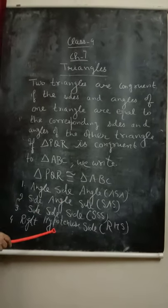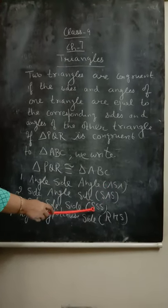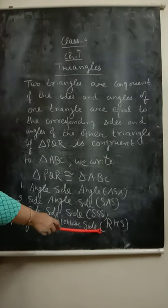These are the four criteria for congruence of triangles: ASA, SAS, SSS, RHS.